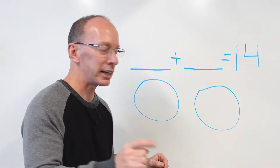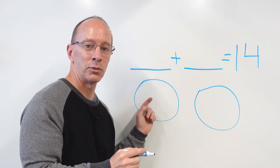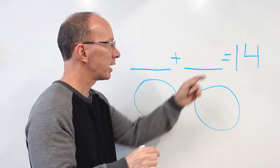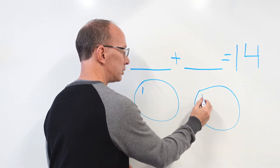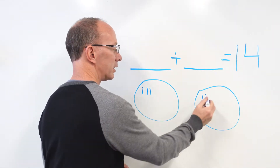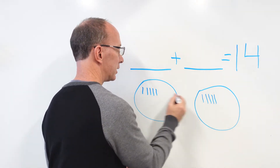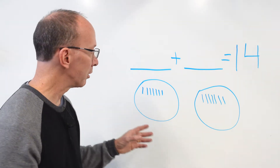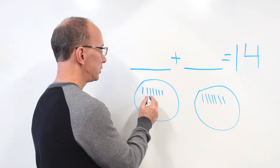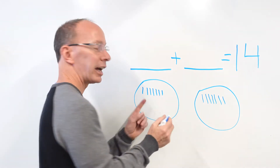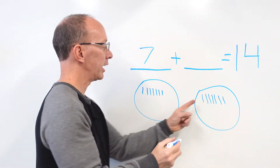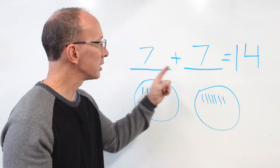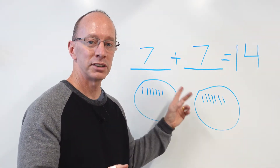Remember, there's a common mistake where some students want to put all 14 tally marks in one circle. So this is the reason I'm teaching you to go back and forth, back and forth. Let's try that again on 14 — count with me: 1, 2, 3, 4, 5, 6, 7, 8, 9, 10, 11, 12, 13, 14. So now I'm going to count the tally marks: 1, 2, 3, 4, 5, 6, 7. I have 7 tally marks right here, and 1, 2, 3, 4, 5, 6, 7 tally marks right there. So 7 plus 7 equals 14 — two groups of 7 that equal 14.